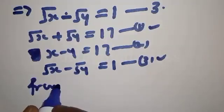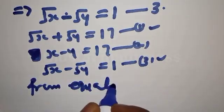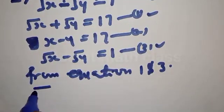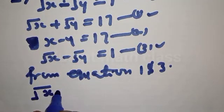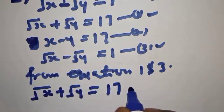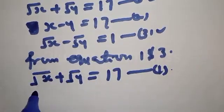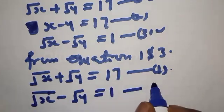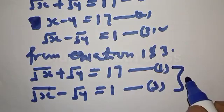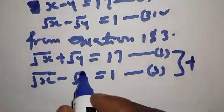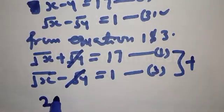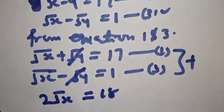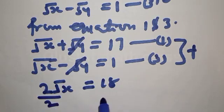Now let's pick equations 1 and 3. Equation 1: square root of x plus square root of y equals 17. Equation 3: square root of x minus square root of y equals 1. Adding equations 1 and 3 together, the square root of y terms cancel, giving us 2 times square root of x equals 17 plus 1, which is 18.